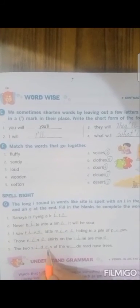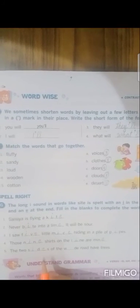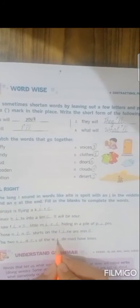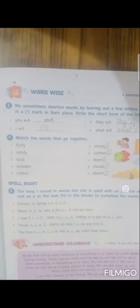And the last sentence, the two dash of the dash road have trees. The two dash, the word will be S-I-D-E-S. Sides of the dash road. It is a wide road, W-I-D-E, have trees.